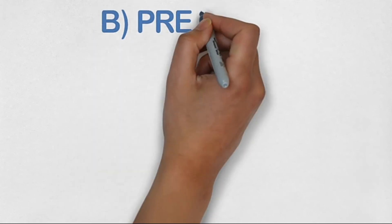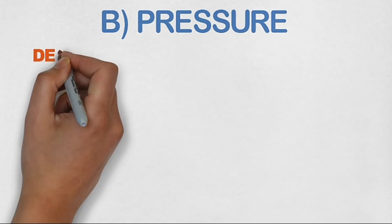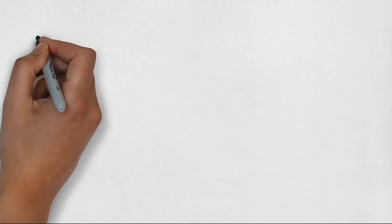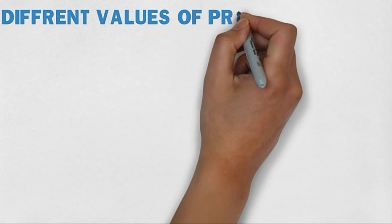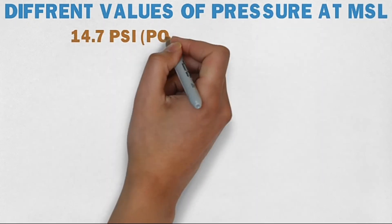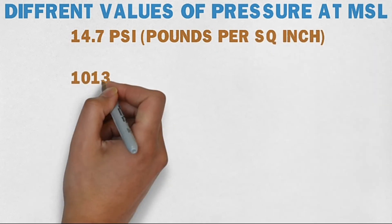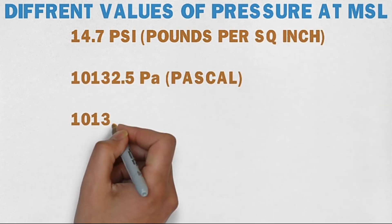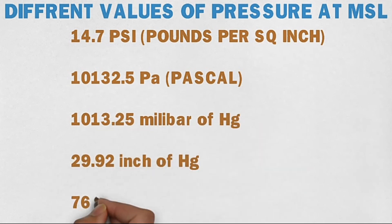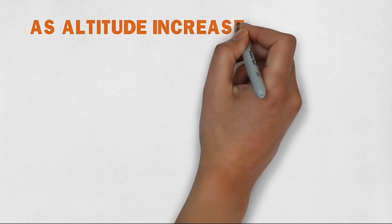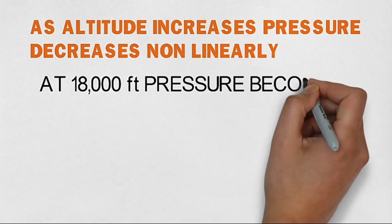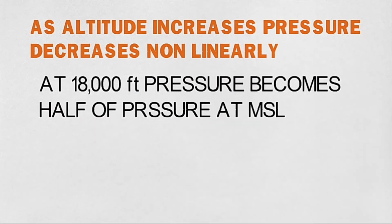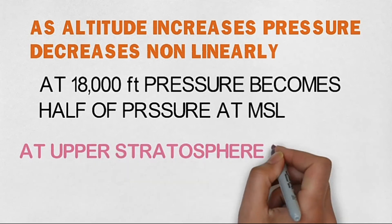Next comes pressure. Pressure is defined as the measure of force per unit area: P = F/A. The weight of air molecules applied per unit area is what we call atmospheric pressure. At mean sea level, the ambient pressure is 14.7 psi, or equivalently 101,325 Pascal, 1013.25 millibar (mb), 29.92 inches of Hg, and 760 mm of Hg. As altitude increases, pressure decreases non-linearly. At approximately 18,000 feet, pressure becomes half of that at mean sea level — from 1013 mb down to about 506 mb. In the upper stratosphere, pressure drops to approximately 28 millibar.